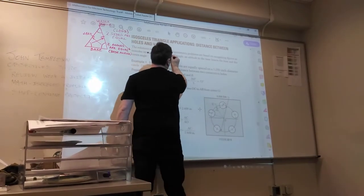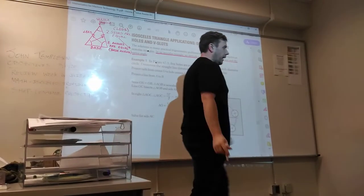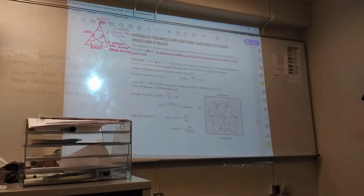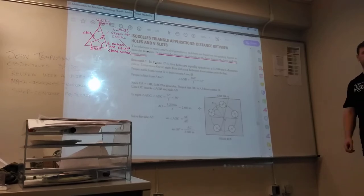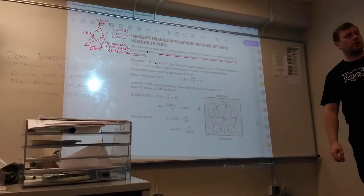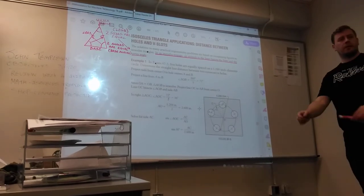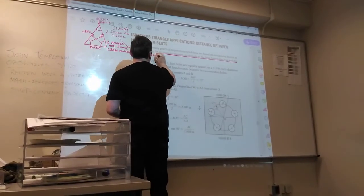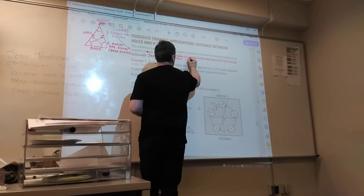So highlight this in your packet. In an isosceles triangle, you have to draw an altitude to the base, perpendicular to the base and the vertex angle. So really what it's telling you in plain English is to draw a line from the vertex angle perpendicular to the base.